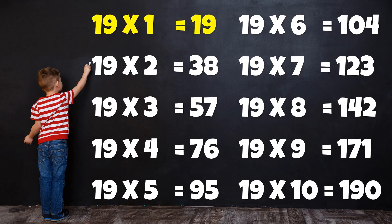Table of 19: 19×1=19, 19×2=38, 19×3=57, 19×4=76, 19×5=95, 19×6=104, 19×7=123, 19×8=142, 19×9=171, 19×10=190.